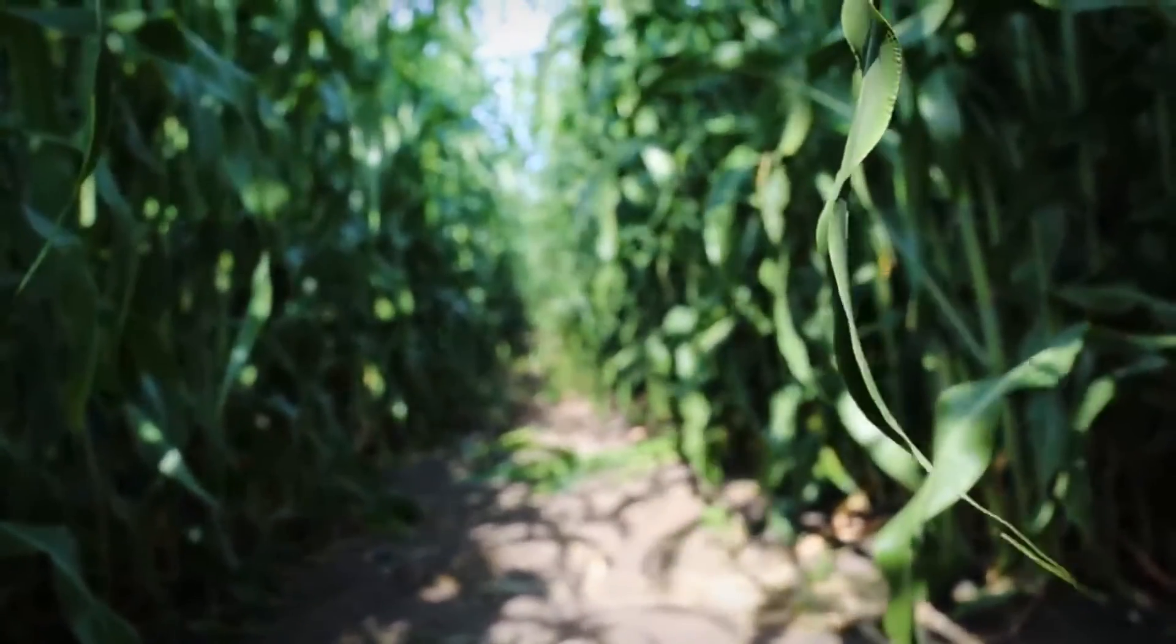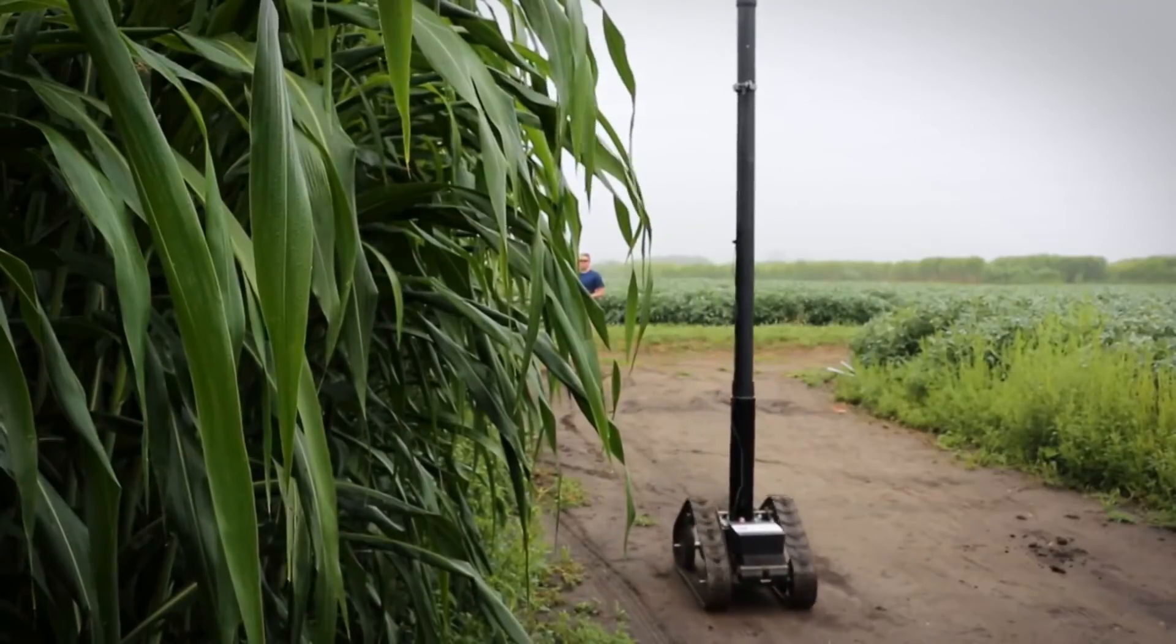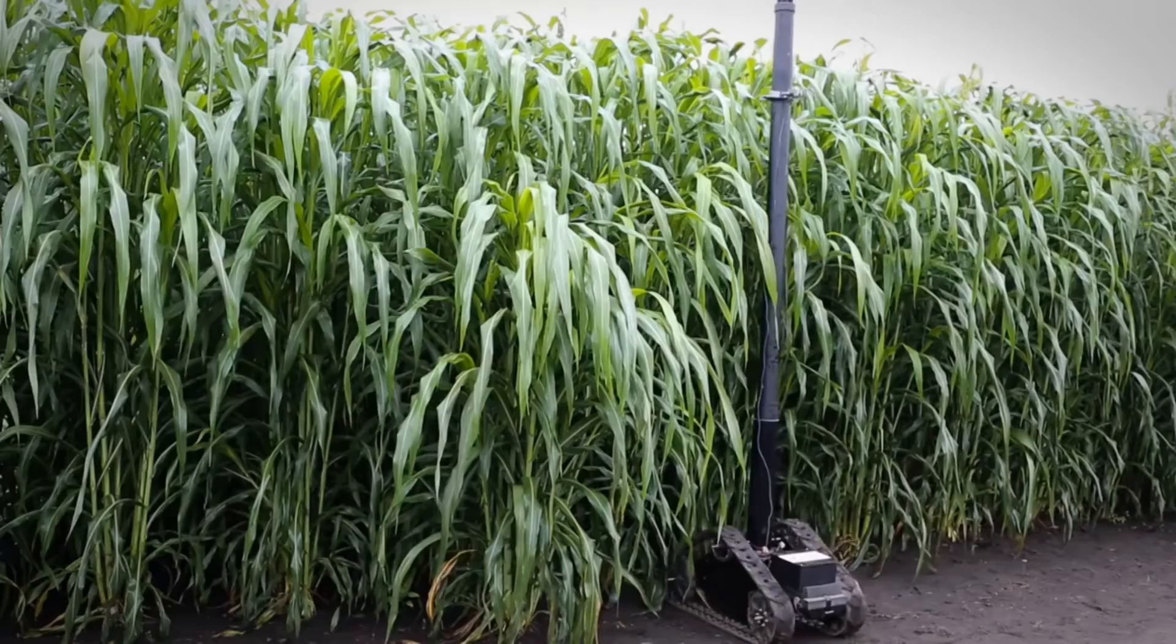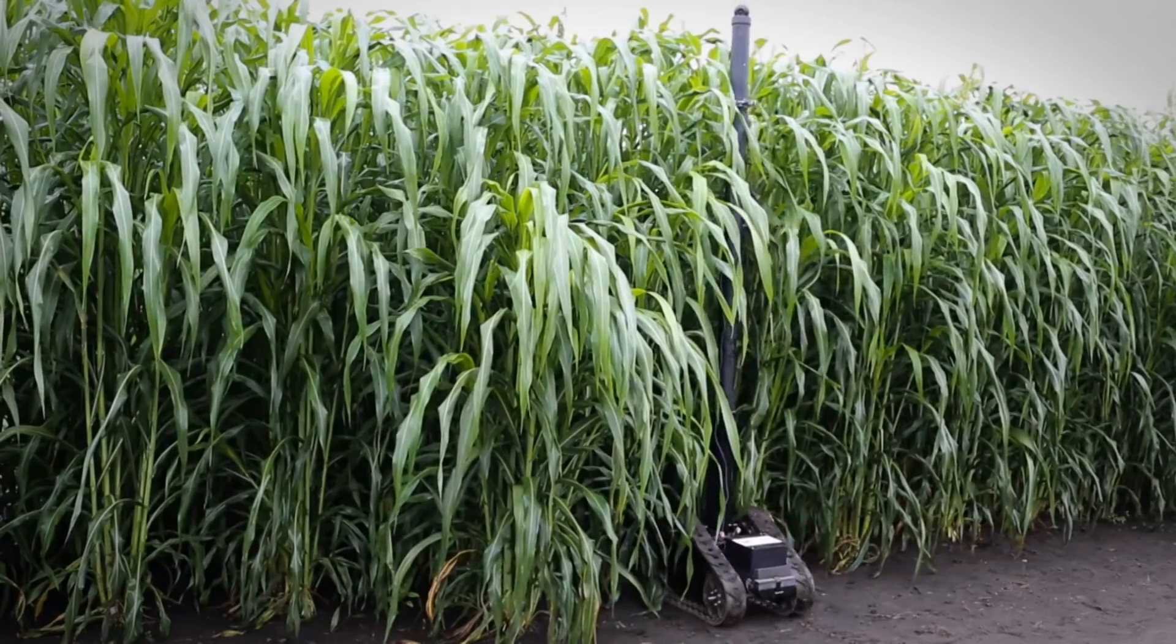Currently, the agricultural robot has only been tested on energy sorghum. However, researchers say the device should work as well with similar tall growing plants such as wheat and corn.